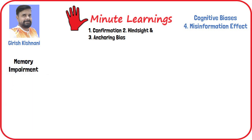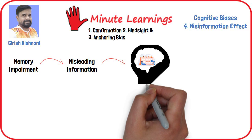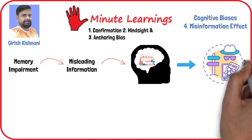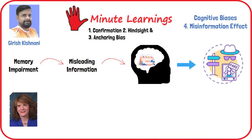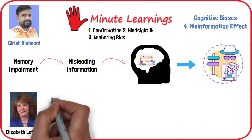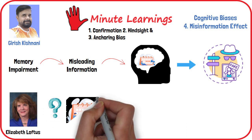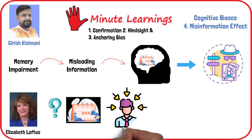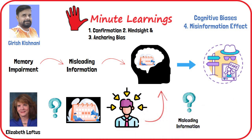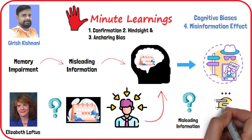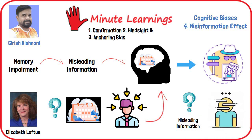The misinformation effect refers to a type of memory impairment caused by the introduction of misleading information. Essentially, the misleading information becomes incorporated into the memory of the past event. The work of psychologist Elizabeth Loftus and her colleagues has demonstrated that the questions asked after witnessing an event can influence a person's memory of that event. In other words, if a question contains misleading information, it can distort the memory of the event.